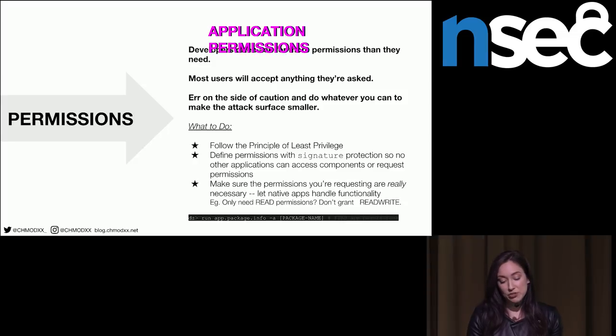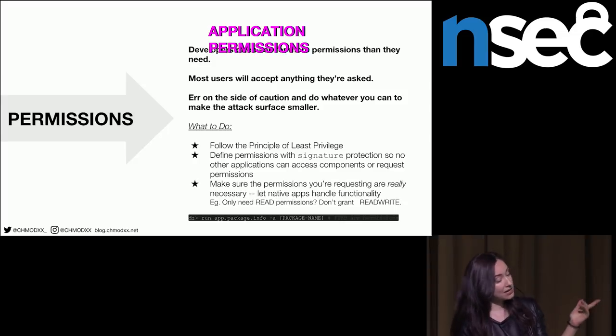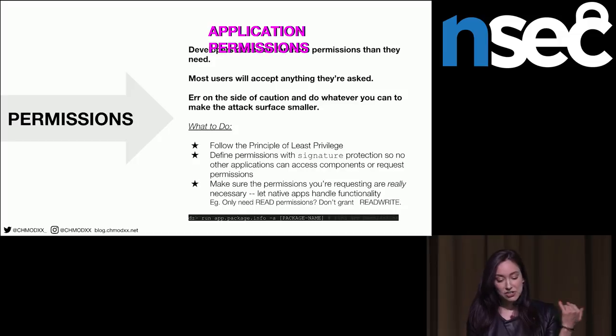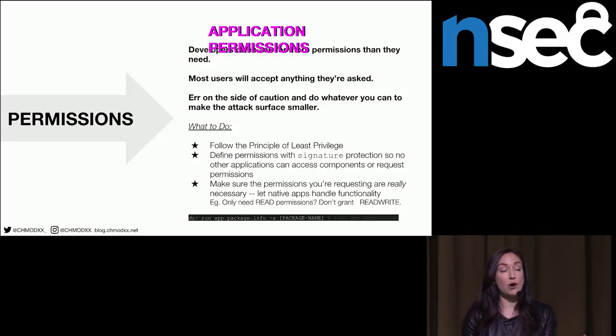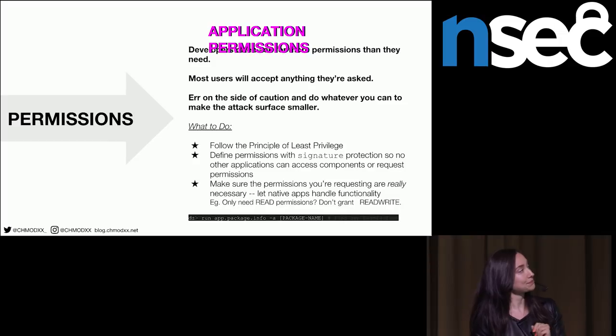It's also important to define permissions with signature protection, which means no other applications can request access to those permissions through your application. If your app is really self-contained, it's a great way to make sure no one can do anything sketchy. There's a handy Drozer command — run app.package.info with a package name — that shows you all the permissions the application you're auditing has.